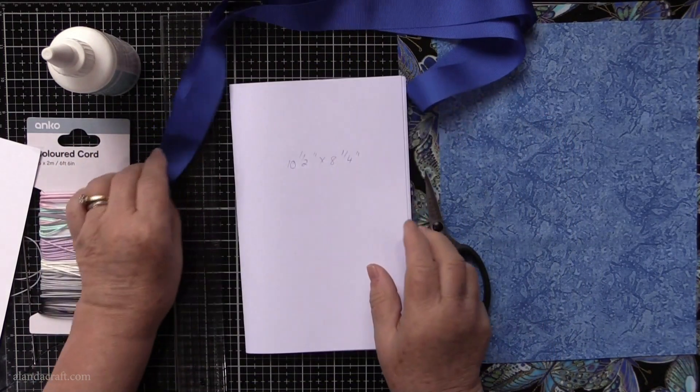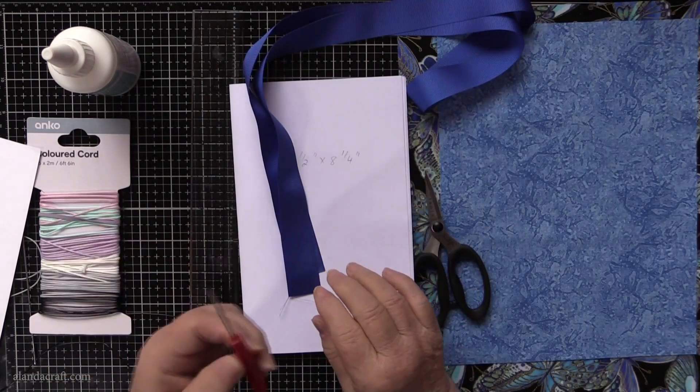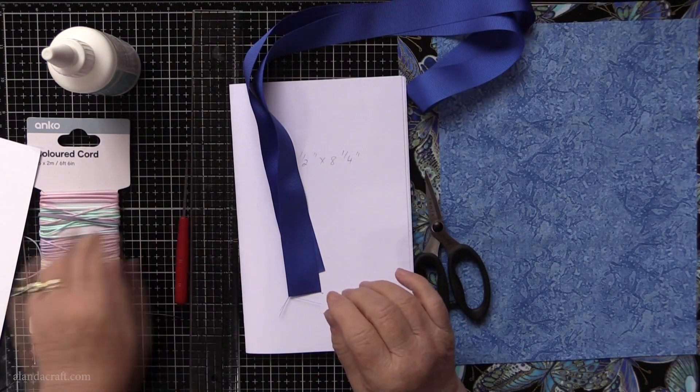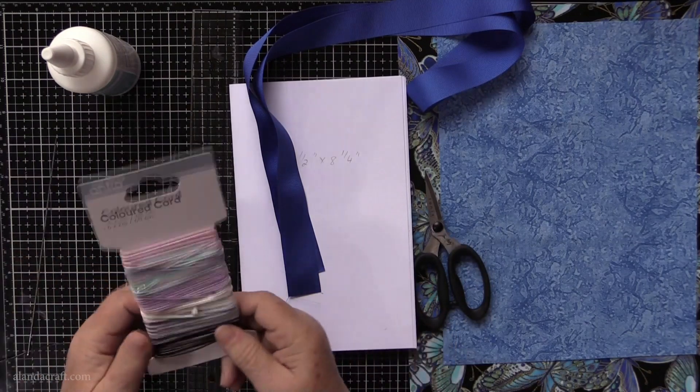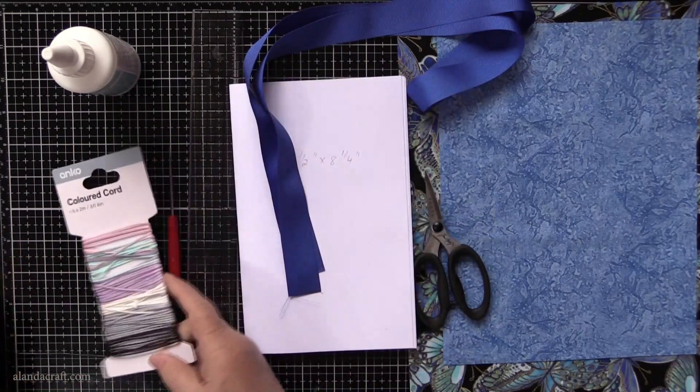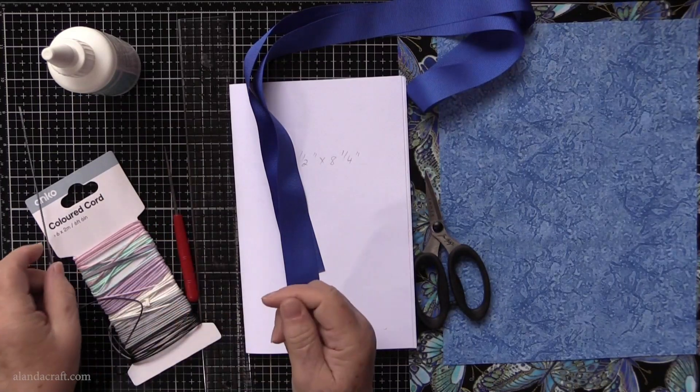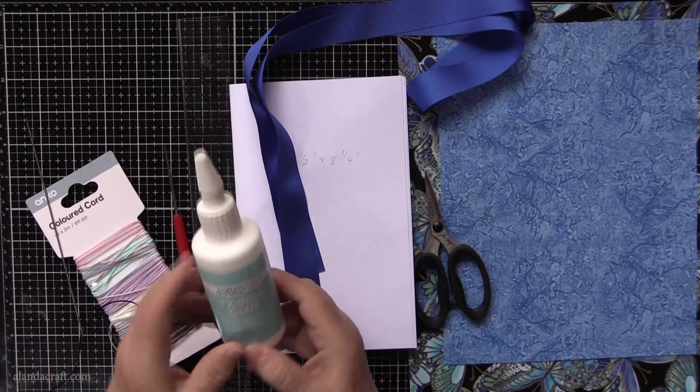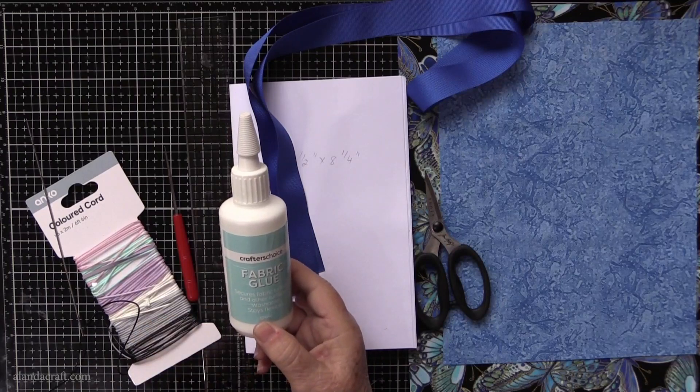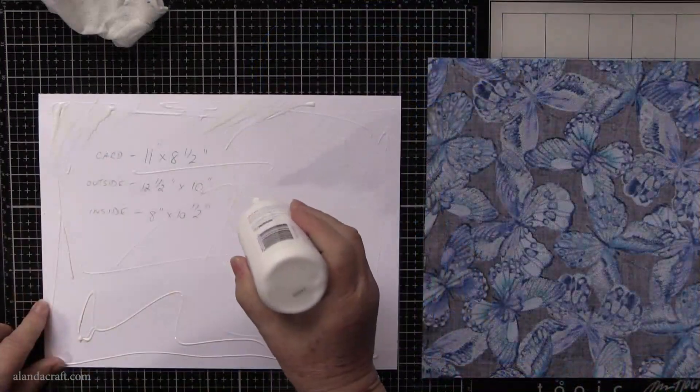You want a ruler and an awl for poking some holes. You need some colored cord - I've just got some black that I'm going to be using. You want a doll needle or a large needle to poke the holes through and some fabric glue - I'm using Crafter's Choice.